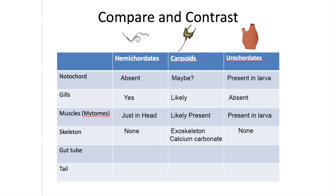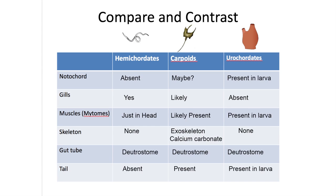Hemichordates and euchordates lack a skeleton, while carpoids exhibit an external skeleton made of calcium carbonate, which is not found in vertebrates. Both carpoids and euchordate larvae have a definitive tail, while the worm-like hemichordates lack a distinct tail separate from their body.